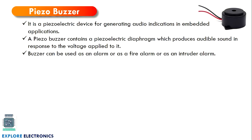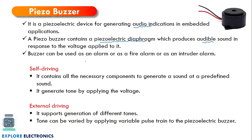Next is the piezo buzzer. The piezo buzzer is a device which produces an audio output in an embedded system. We use it to make some sound. It has a piezoelectric diaphragm which produces the audible sound. There are two cases: one is the self-driving buzzer, and another is the external-driving buzzer. Self-driving means it contains all the necessary components to generate a sound, but it will generate a sound at a predefined frequency — only one tone can be expected from the buzzer once connected to a microcontroller.